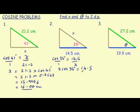We get x on its own, so we divide both sides by cosine 35 degrees. Cosine 35 degrees cancels on the left, and we're left with it underneath the 14.5. So x is equal to 14.5 divided by cosine 35 degrees.